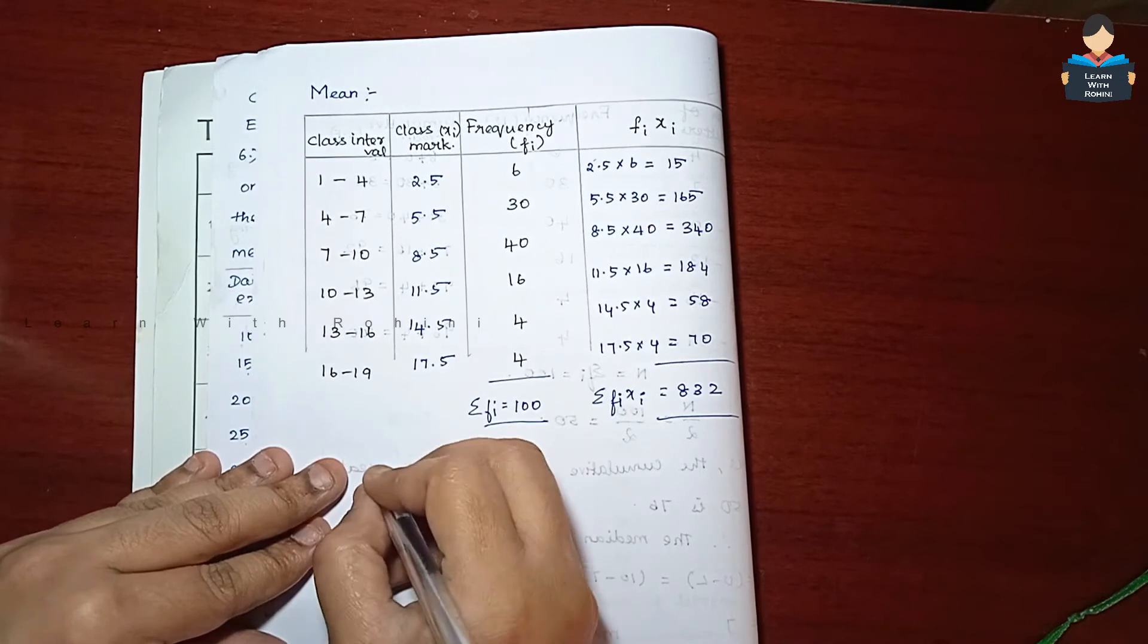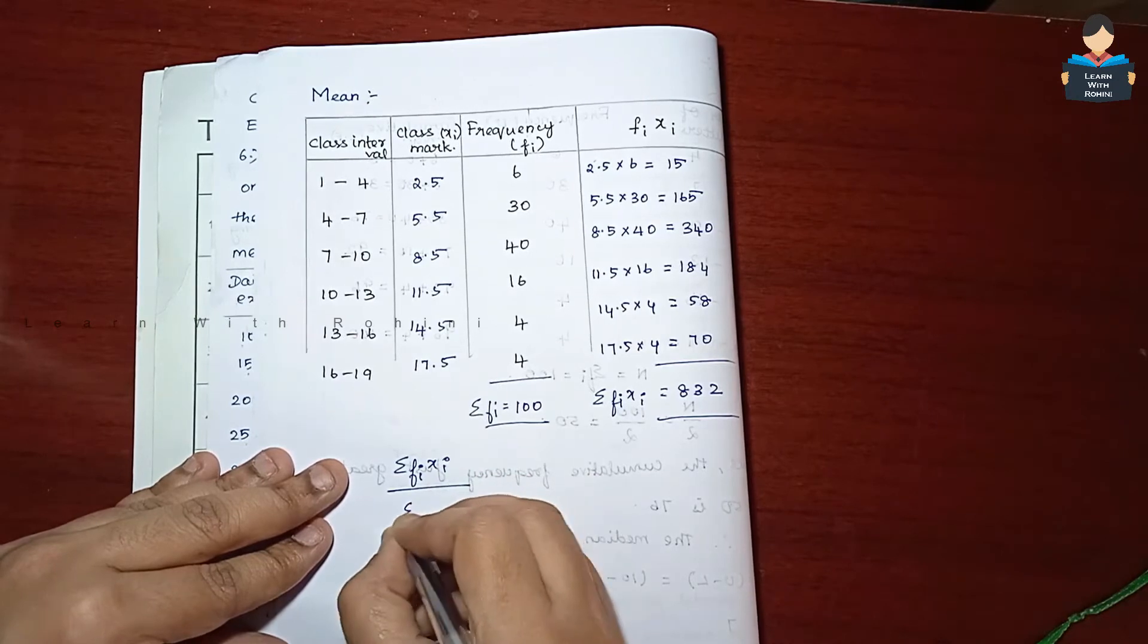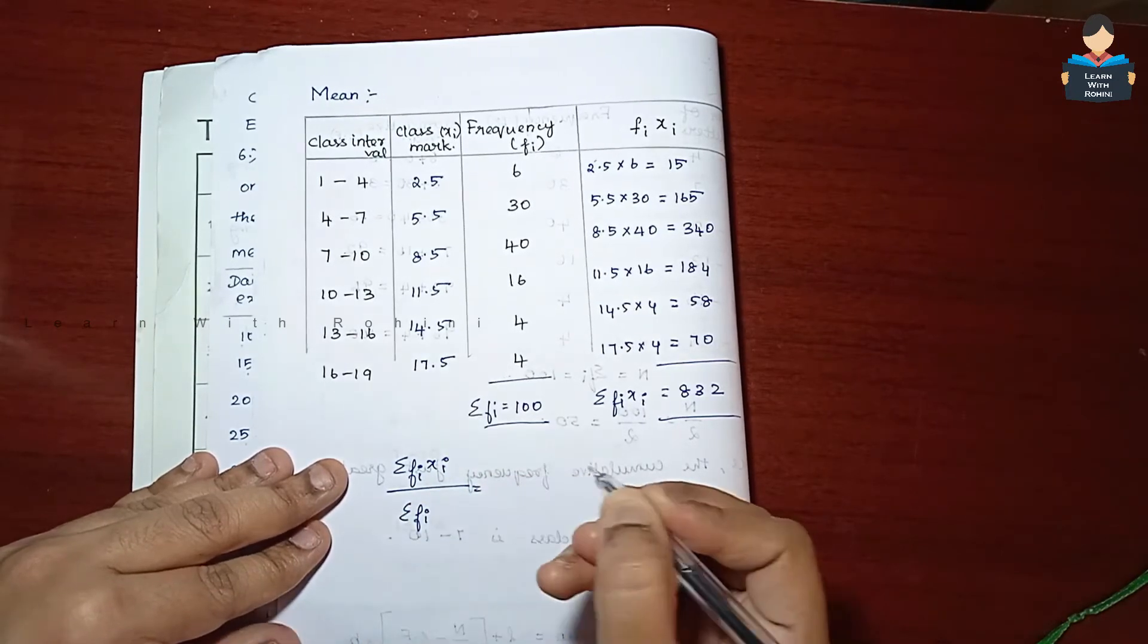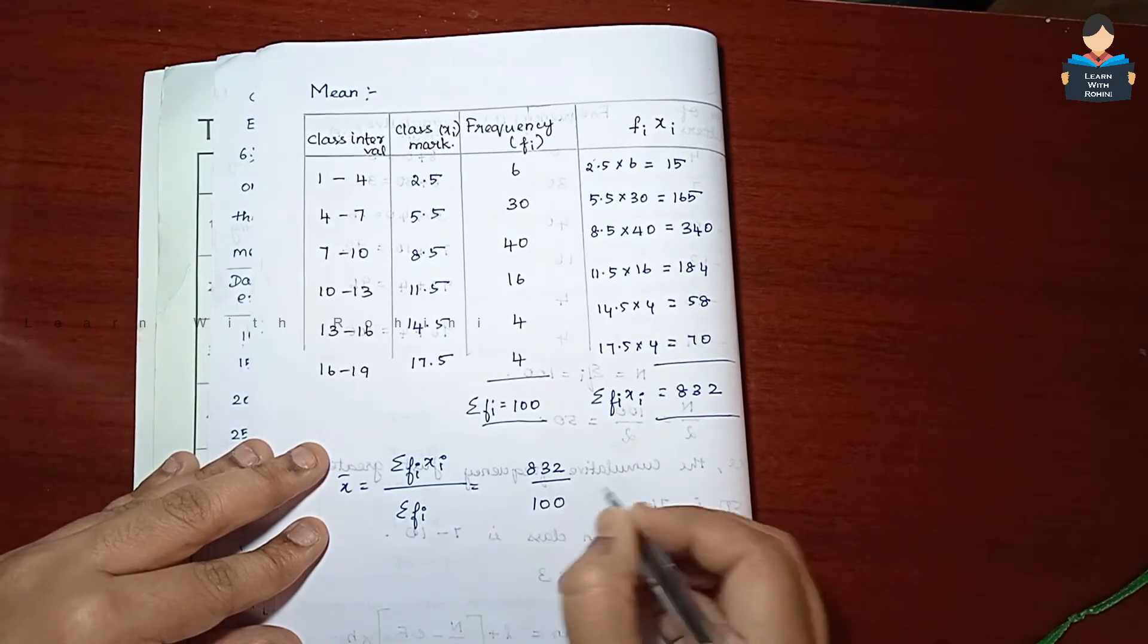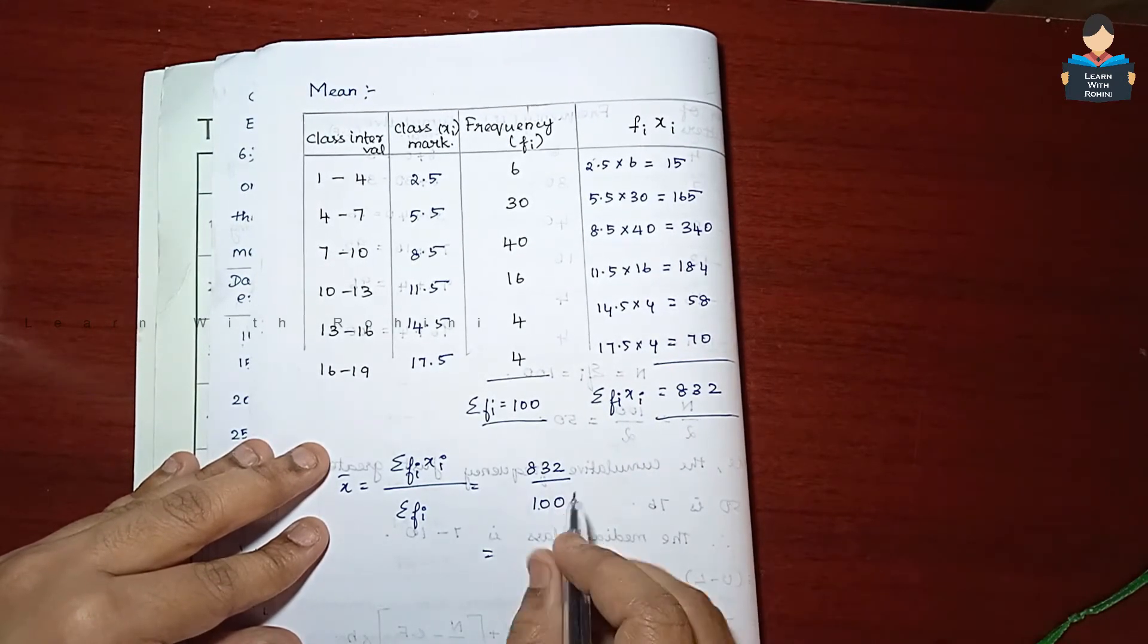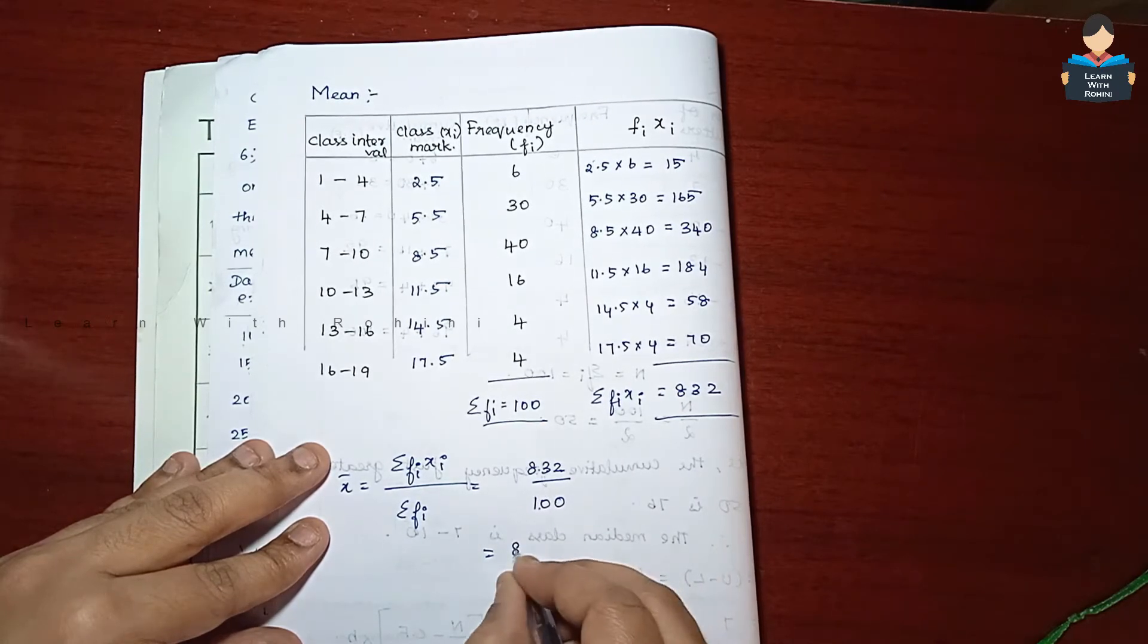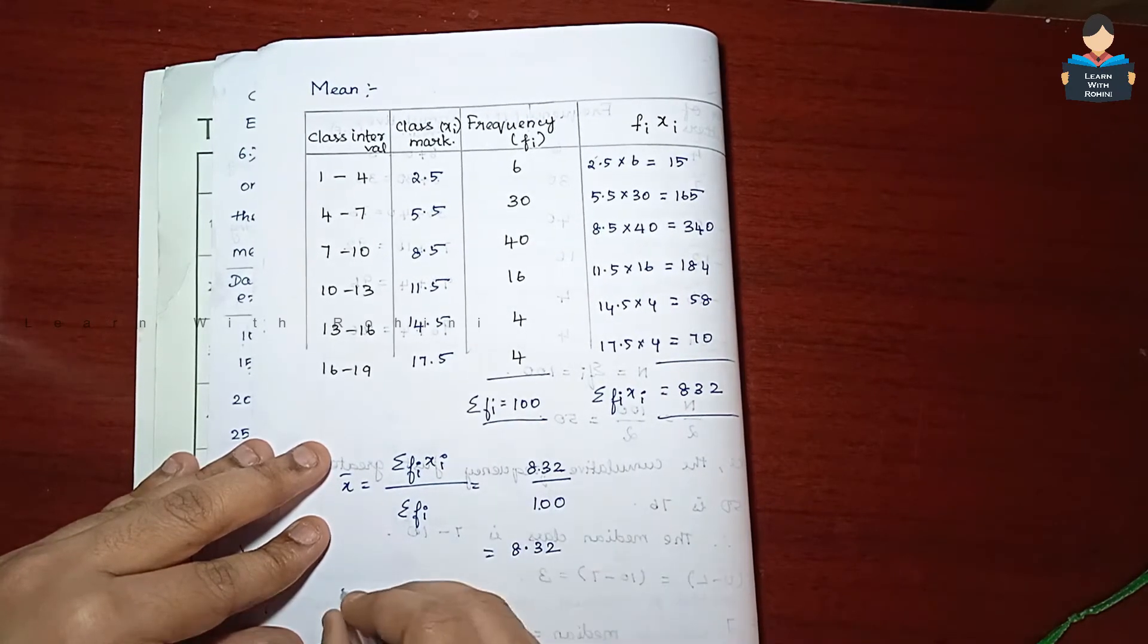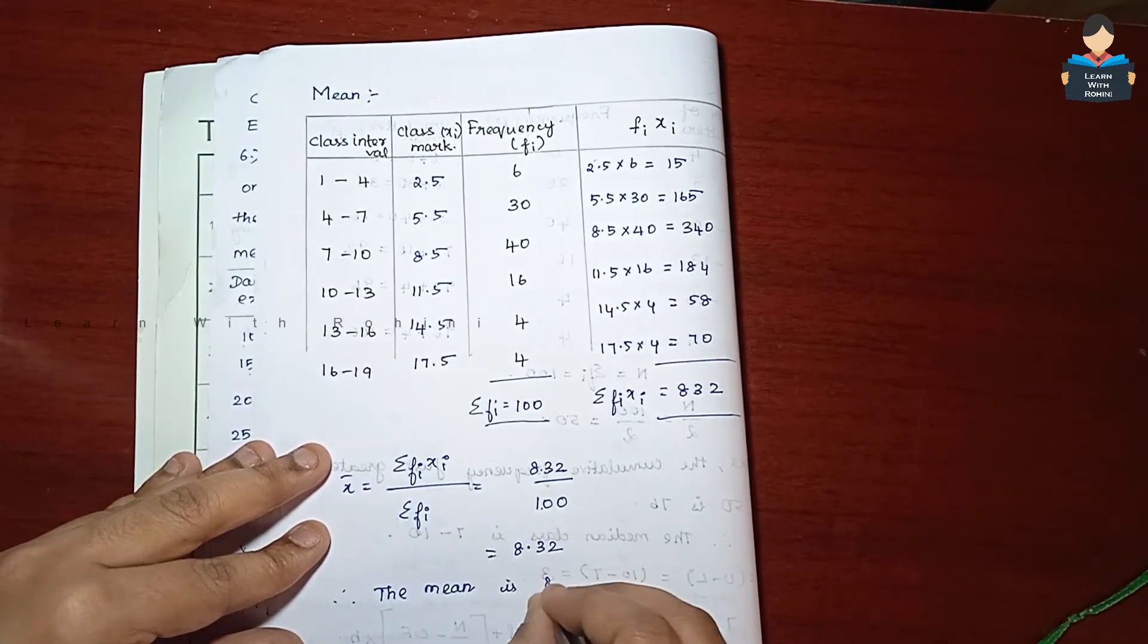We will substitute the formula. Mean equals sigma fixi by sigma fi, which equals 832 by 100. So two zeros cancel. The mean is 8.32.